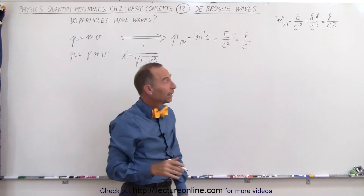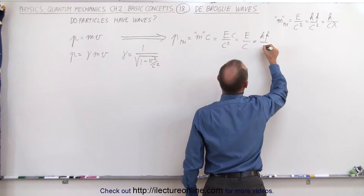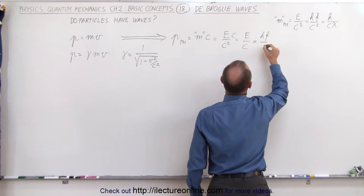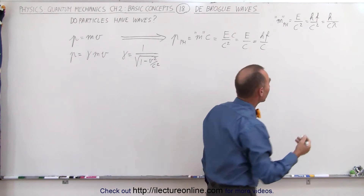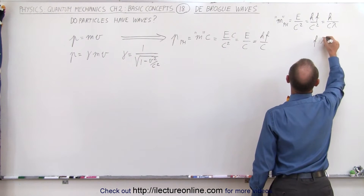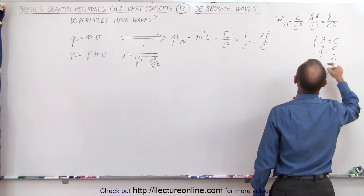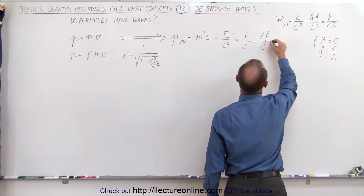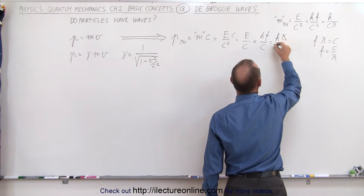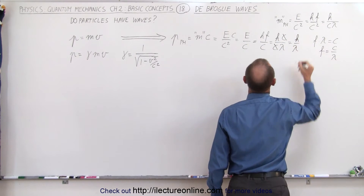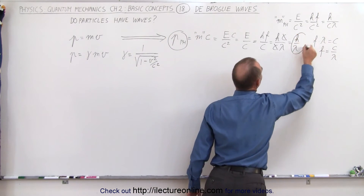And of course, for a photon, the energy is equal to h times f, so we have h times f over c. We can replace f in terms of lambda: f times lambda equals the speed of light, or f is equal to c divided by lambda. So if we replace f by c over lambda, this becomes h times c over c times lambda, and the c's cancel out, and we get h over lambda. In other words, the momentum of a photon is equal to h over lambda.